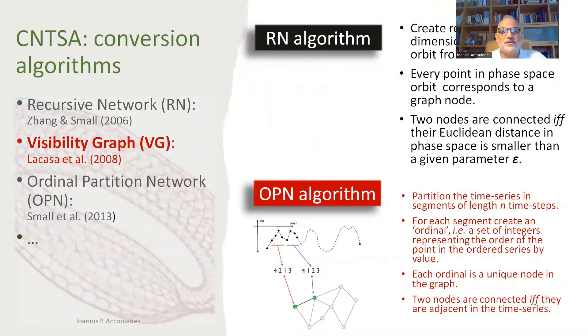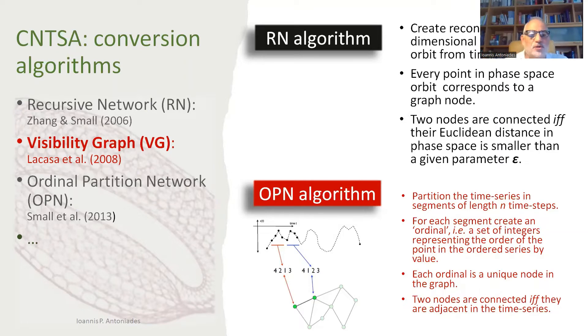The most popular conversion algorithm, very briefly, was the first one that appeared, the recursive network algorithm introduced by Zank and Small in 2006. And that's what basically started this field. But then you had a number of other algorithms that appeared and they keep appearing. The most prominent one is the visibility graph algorithm two years later by Lacasa.